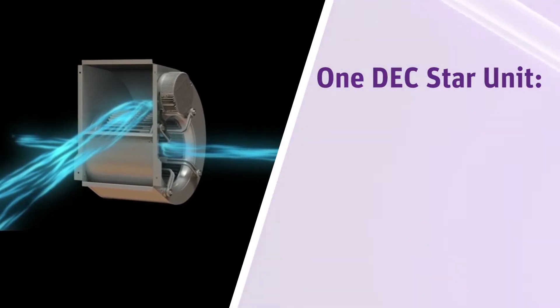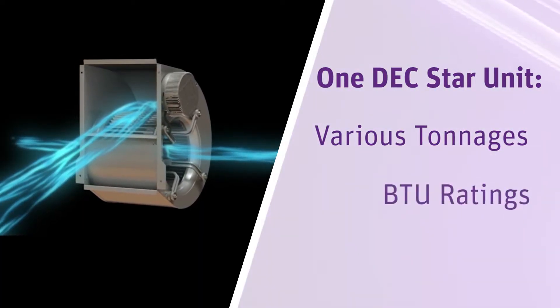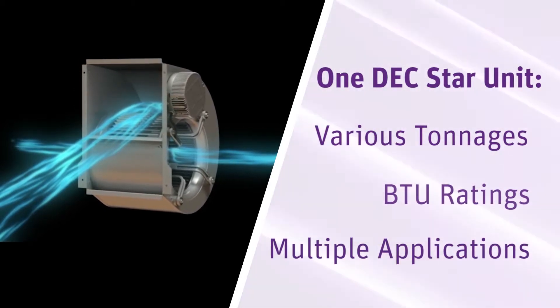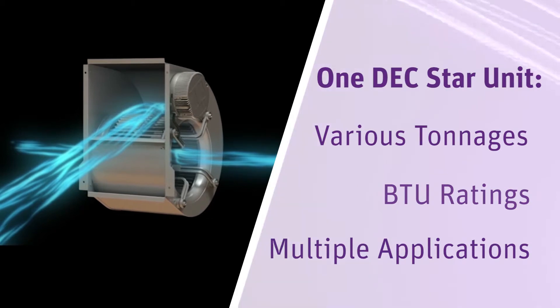Due to the larger operating range of Dextar, customers can use one Dextar for various tonnages, BTU ratings and even multiple applications. This simplifies product families while creating economies of scale. That means higher volumes and lower per unit cost for customers.